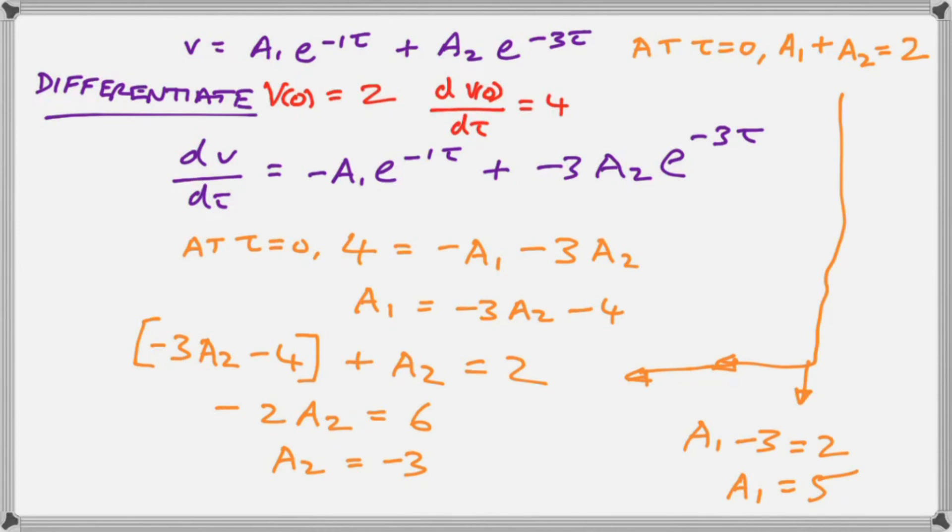So we have two equations, two unknowns, a1 and a2, and we solve them for 5 and minus 3. And then we're in a position to write our final answer.